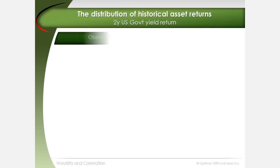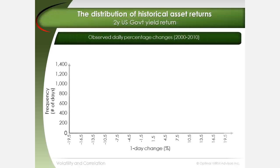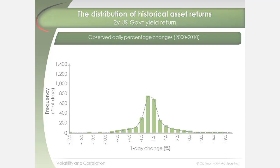A histogram of daily changes in two-year U.S. government yields reveals a similar bell-shaped pattern, albeit more widely scattered based on the magnitude of change.